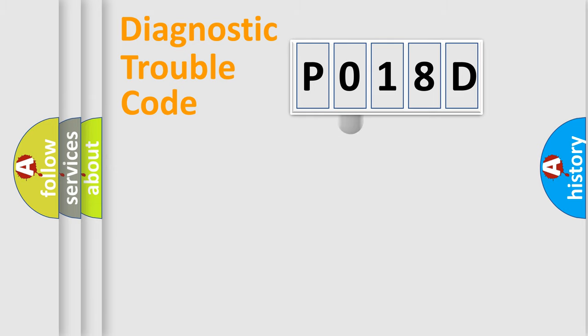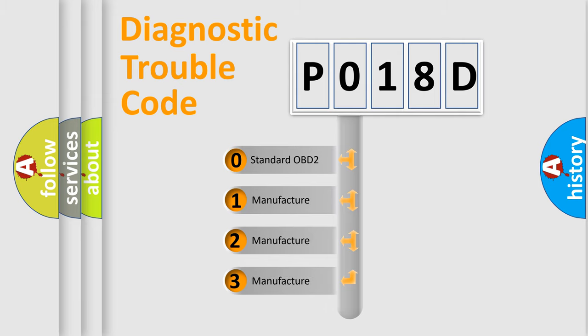This distribution is defined in the first character code. If the second character is expressed as zero, it is a standardized error. In the case of numbers 1, 2, or 3, it is a more specific expression of the car-specific error.